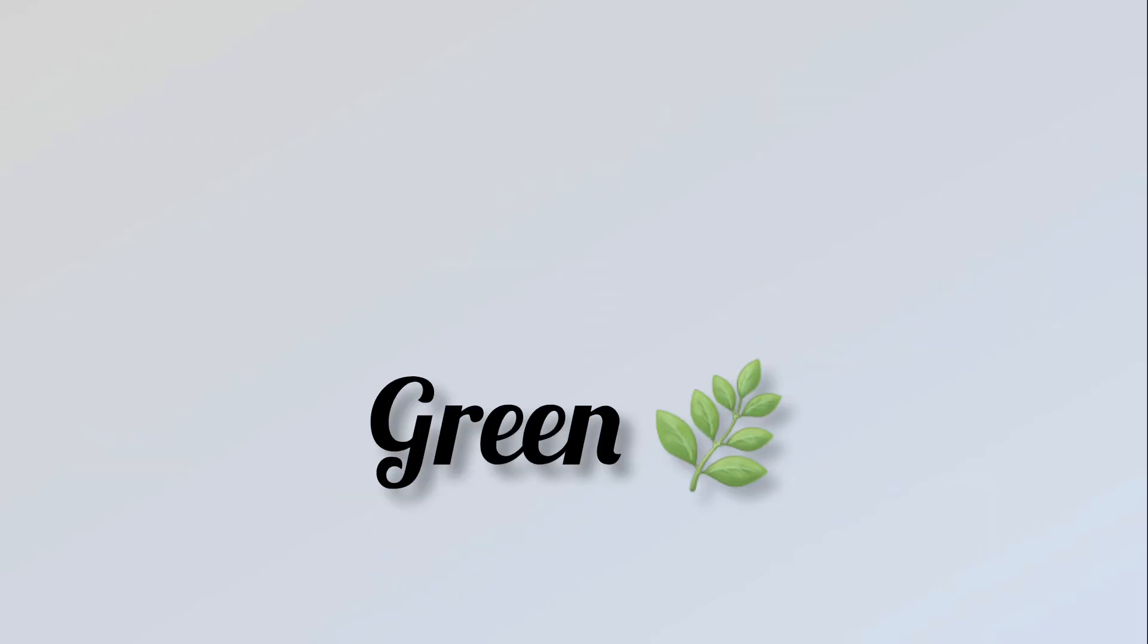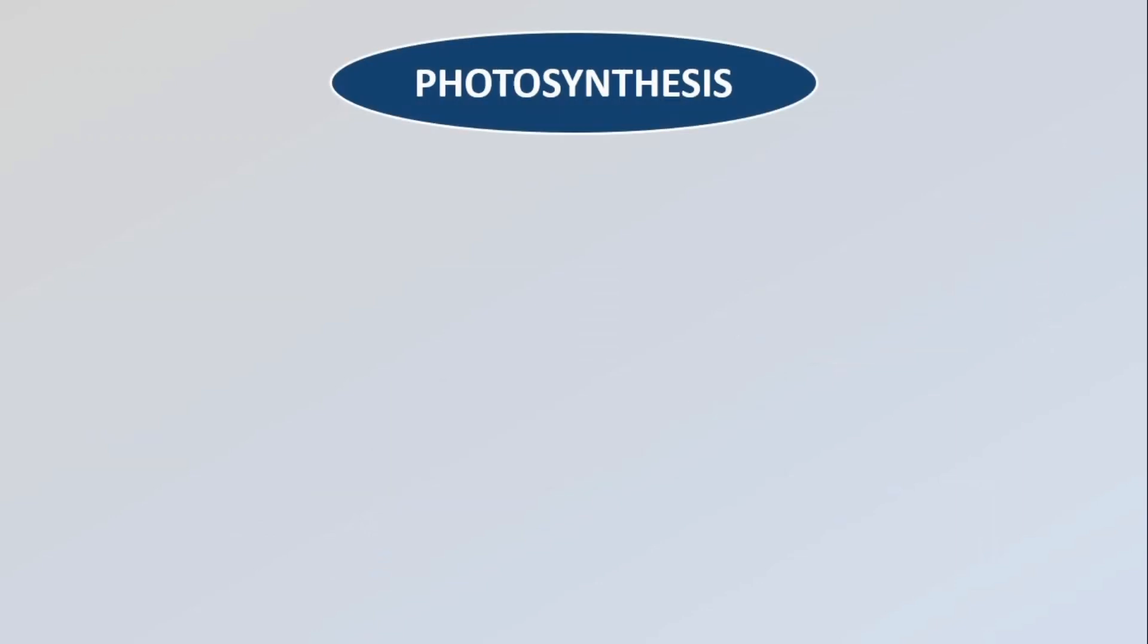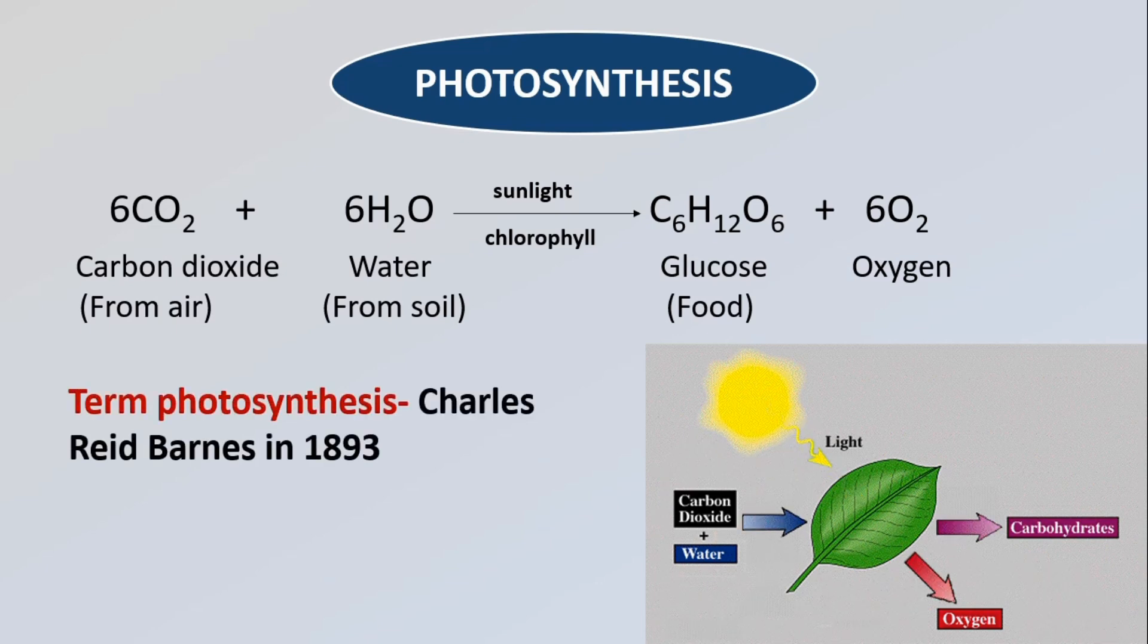Green plants are autotrophs and make their own food by the process of photosynthesis. Photosynthesis is the process by which green plants make their own food from carbon dioxide and water using solar energy in the presence of chlorophyll. Oxygen gas is released during photosynthesis. The term photosynthesis was given by Charles in 1893. Photo means light and synthesis means to build.